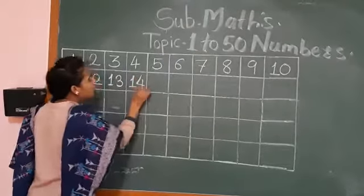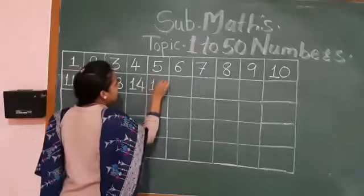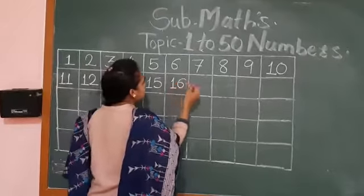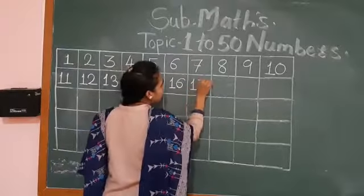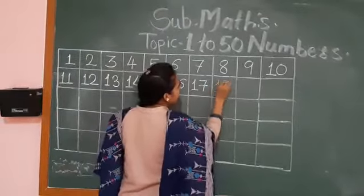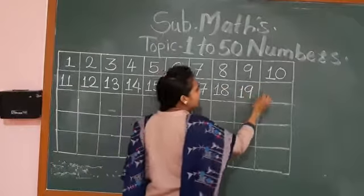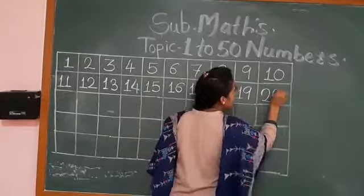One tenth four, fourteen. One tenth five, fifteen. One tenth six, sixteen. One tenth seven, seventeen. One tenth eight, eighteen. One tenth nine, nineteen. Two tenths, twenty.